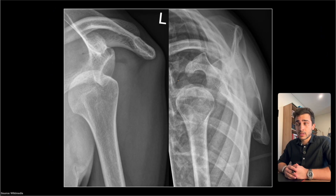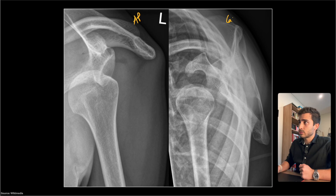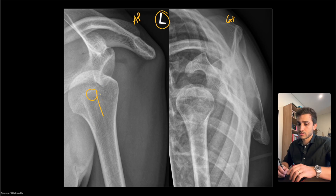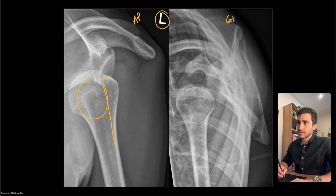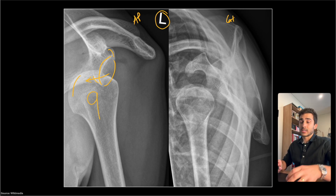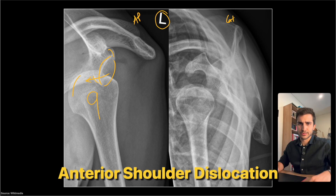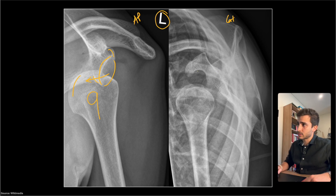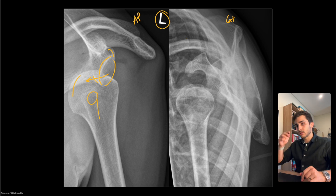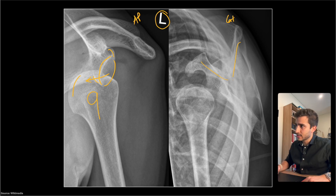Now for case two — we have an AP and a lateral of the left shoulder. Looking at the humeral head, it doesn't really look like a light bulb; it kind of looks like a Q. You can also see that it's dislodged from the glenoid fossa — this is the part of the scapula where the humeral head usually sits, but it's gone and dislodged. So very clearly, if it looks like a Q and it's dislodged, it's an anterior shoulder dislocation. The image on the right is an attempt at a Y lateral, which is ideally meant to look like a Y shape.